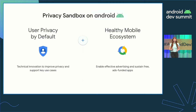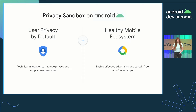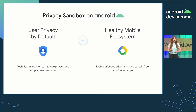The Privacy Sandbox aims to improve user privacy without putting access to free content and services at risk for the mobile ecosystem. To do this, we have Topics, Fledge, Attribution Reporting, and the SDK Runtime.